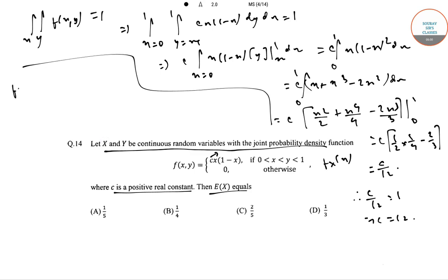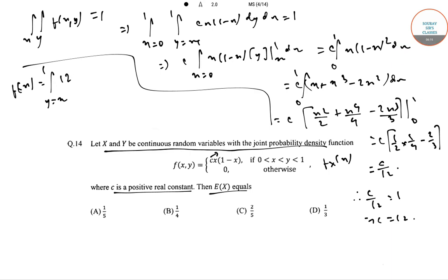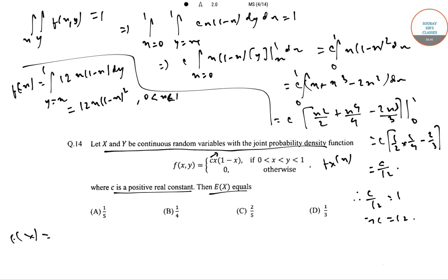Now to calculate the marginal density function f_X(x), we integrate over the limits of y. Integrating f(x,y) = 12x(1-x) with respect to y from x to 1 gives f_X(x) = 12x(1-x)^2 for 0 < x < 1. Then E(X) = integral of x × f_X(x) dx.